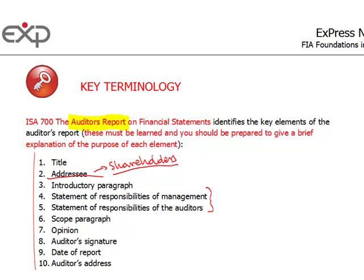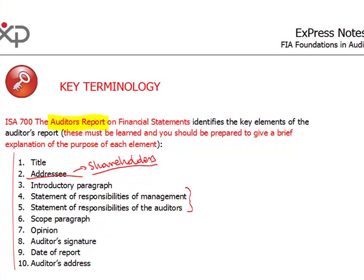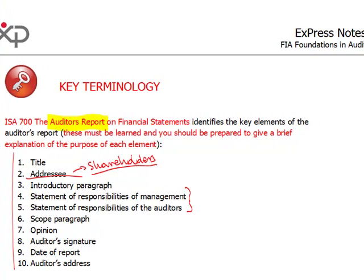Why do these two go into the auditor's report? To bridge the expectations gap, so that it's clear to anyone who reads the auditor's report that the managers were responsible for doing some part of the work while the auditors were responsible for something completely different.